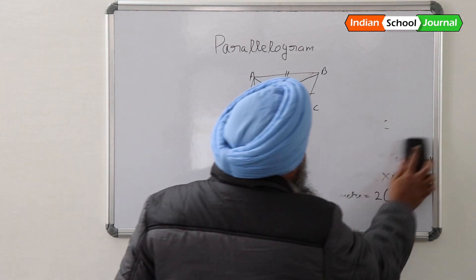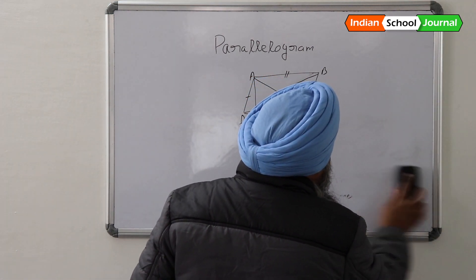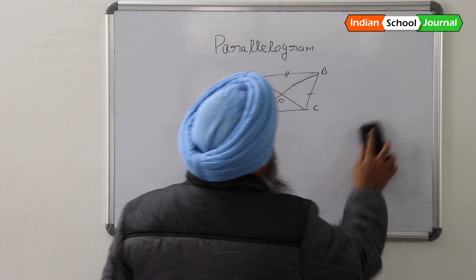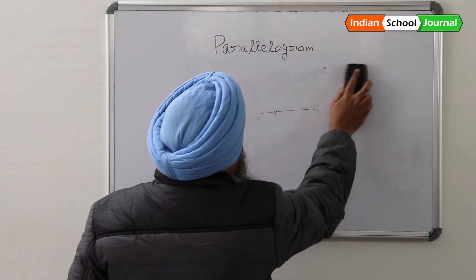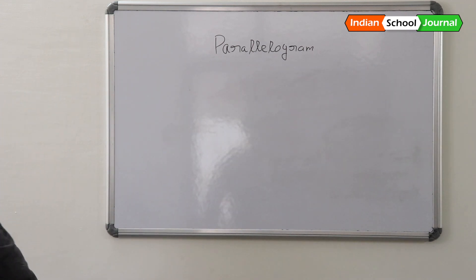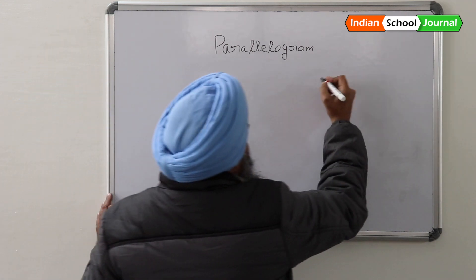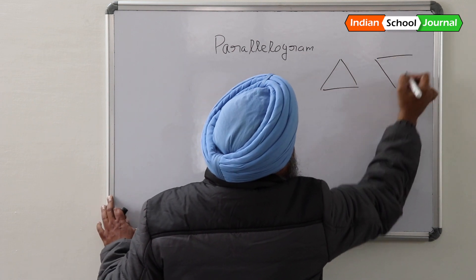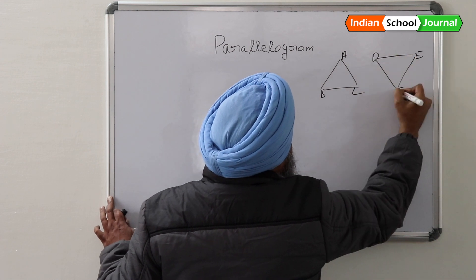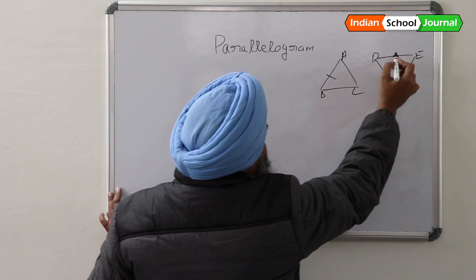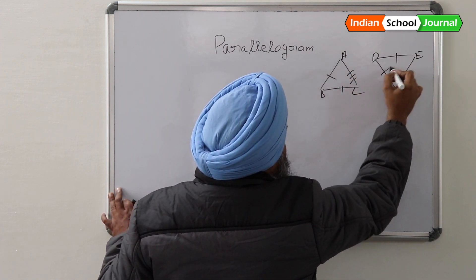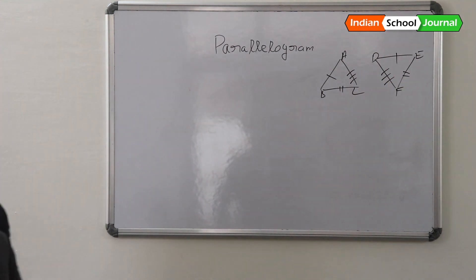What do you know about congruency? What does congruency state? Congruency states that the three angles and three sides of two triangles are equal. If I say there are two triangles and they are congruent — for example, triangle ABC is congruent to triangle DEF — then this side is equal to this, this one is equal to this, and this one is equal to this.